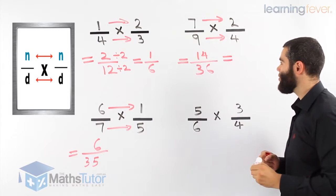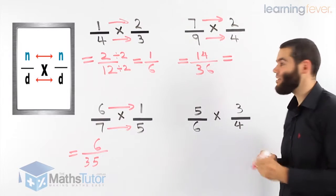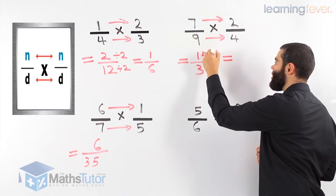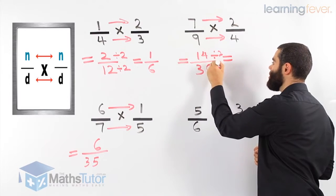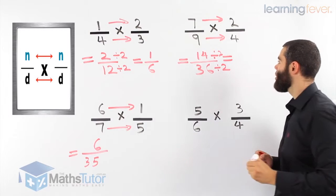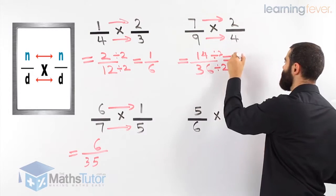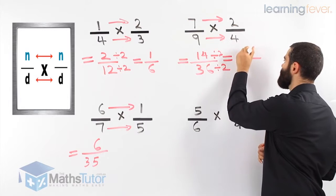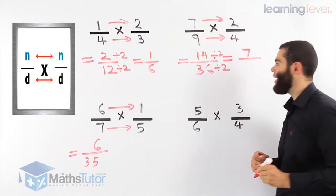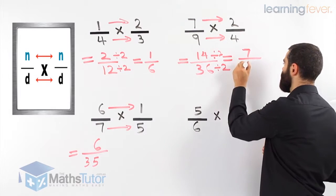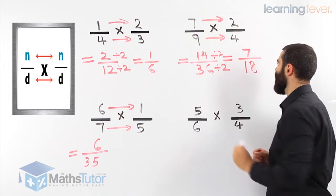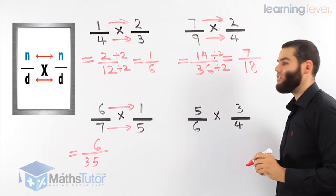Fourteen over 36, the highest common factor is two. So we're going to divide by two and divide by two. So 14 divided by two, our answer is seven, and 36 divided by two is 18. Our final answer is seven over 18.